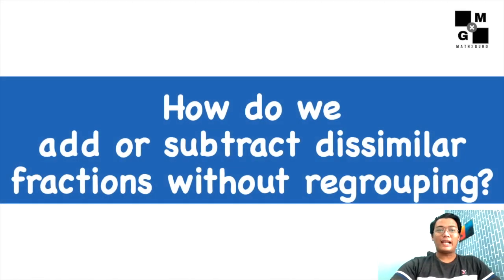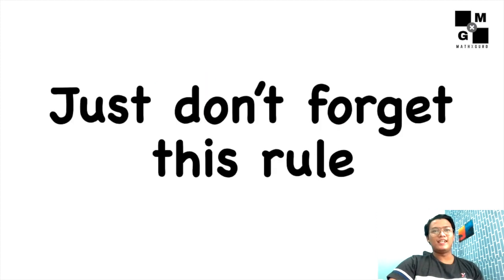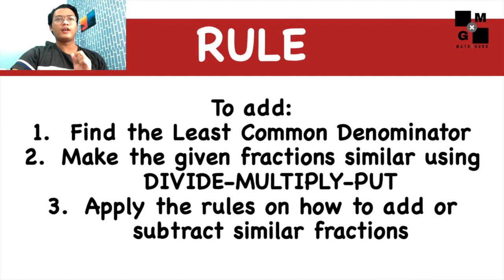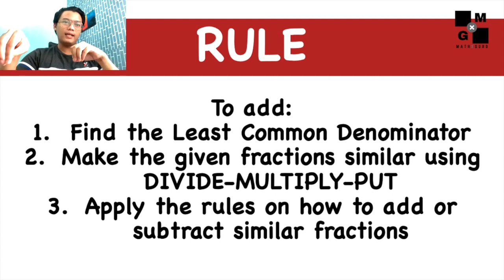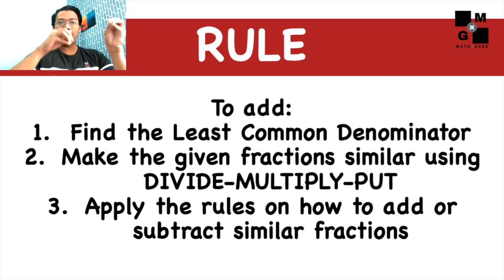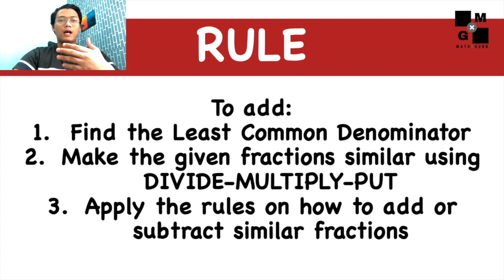How do we add or subtract dissimilar fractions? It's easy — just don't forget this rule. First, find the least common denominator. Next, make your given fractions similar using the technique divide, multiply, and put. And the last one, apply the rules on how to add or subtract similar fractions.